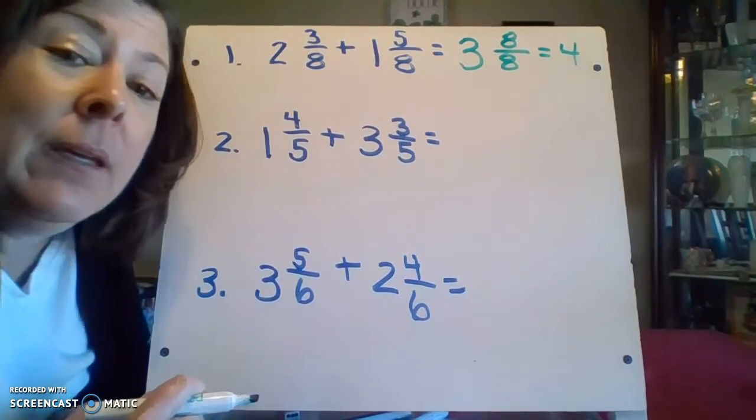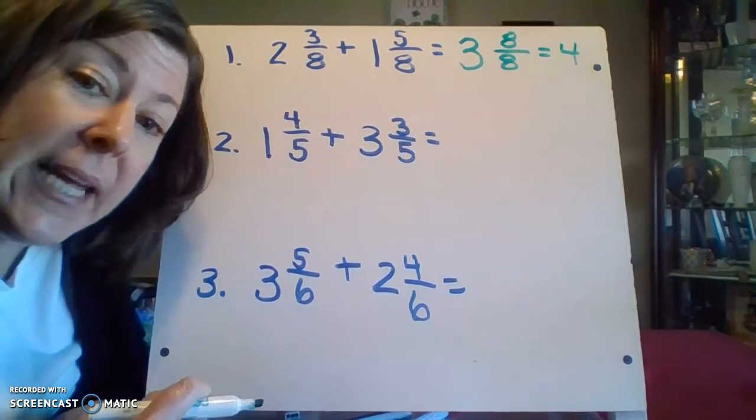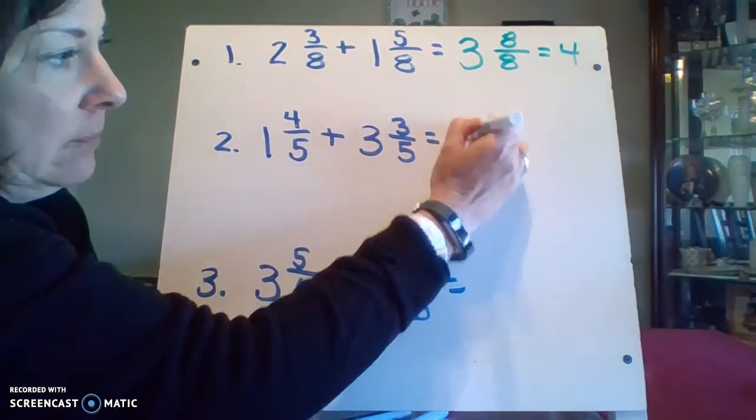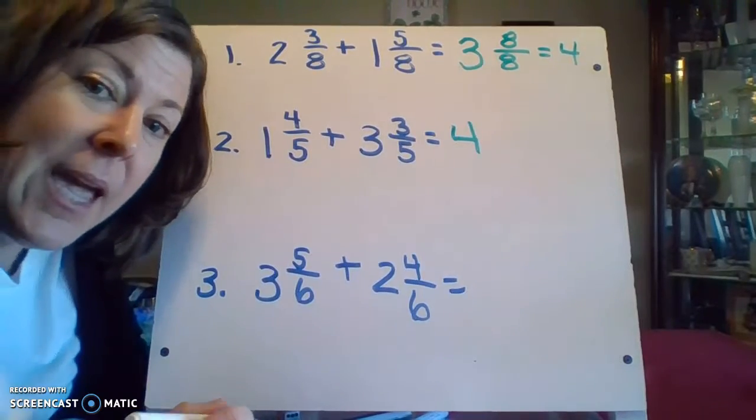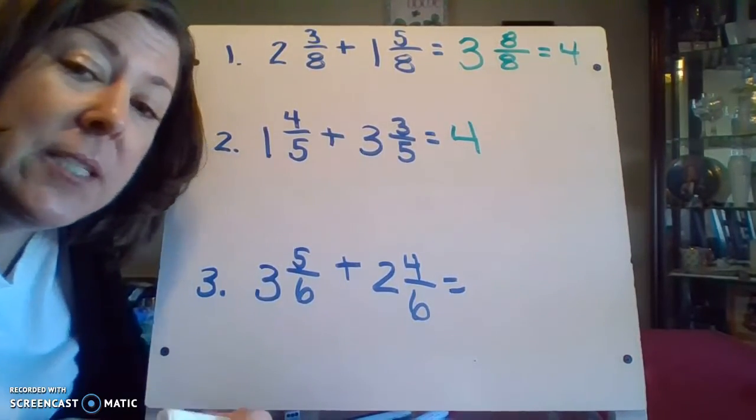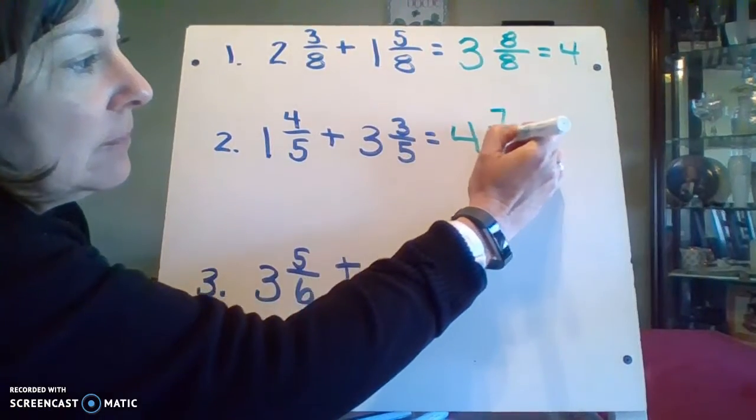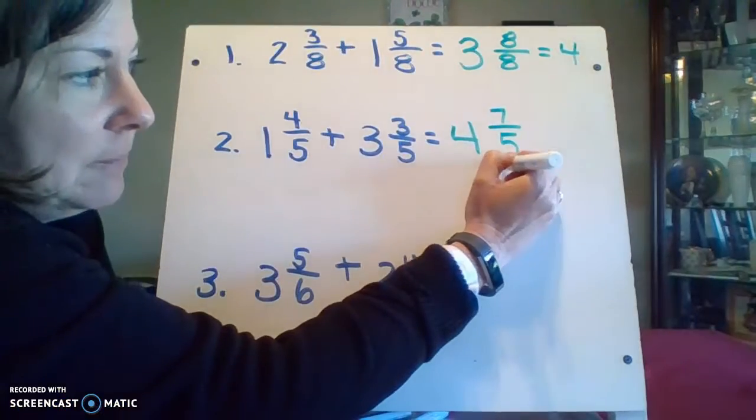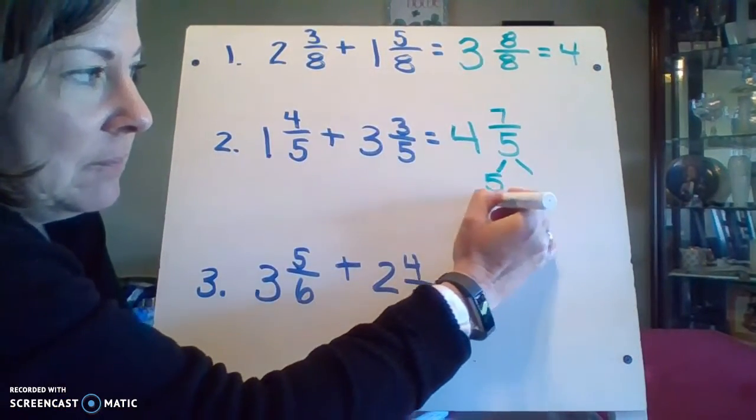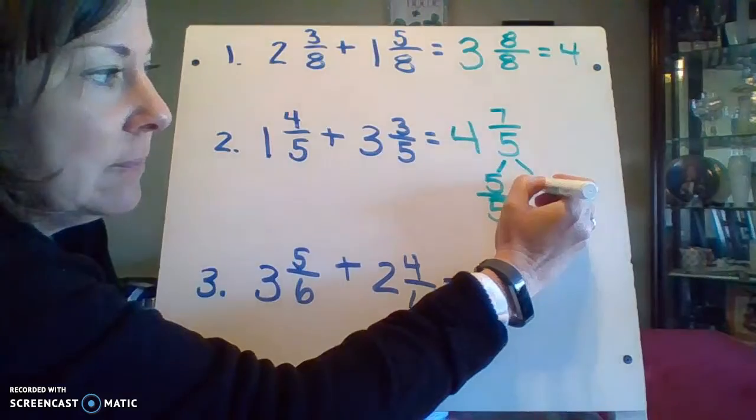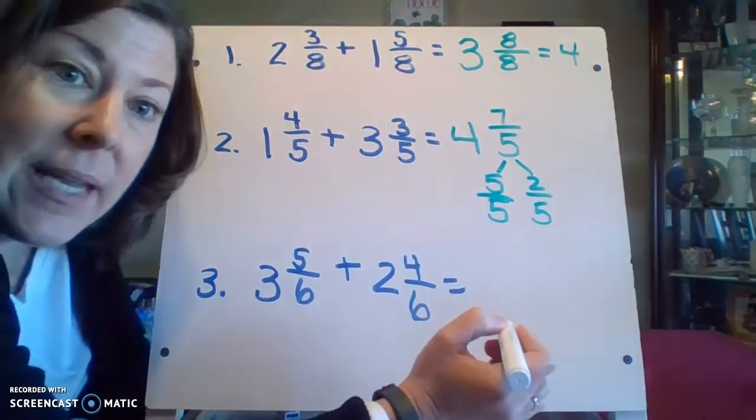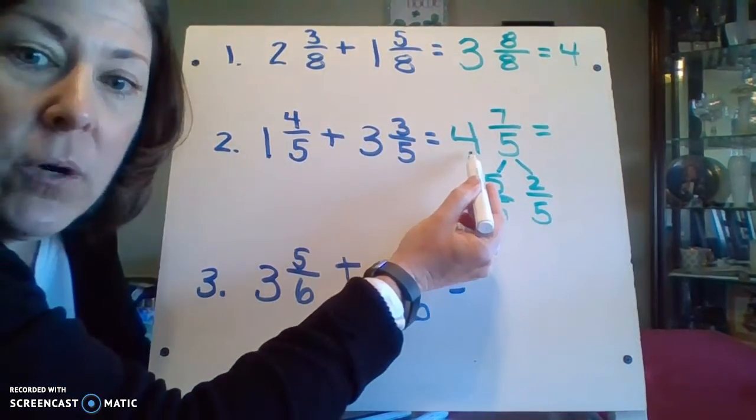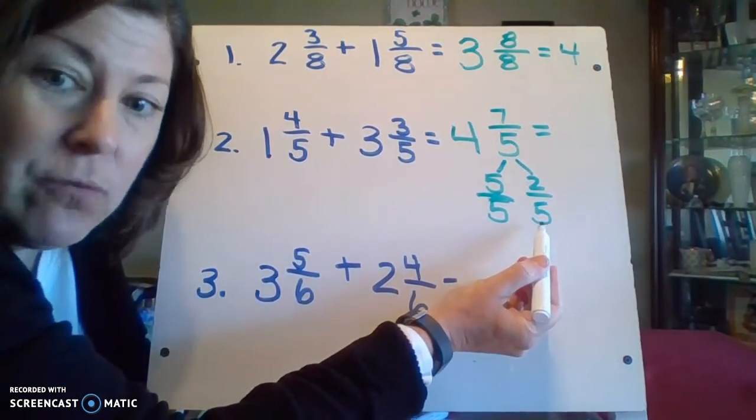So then my second example. One and four-fifths plus three and three-fifths. Again, start by adding my ones. One and three is four. Then I add my fractions. Four-fifths plus three-fifths is seven-fifths. Well, I know I can't leave it like that. I pulled out one and I still have two-fifths left. So my final answer, four, five and two-fifths.